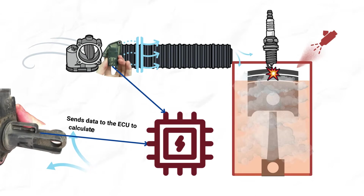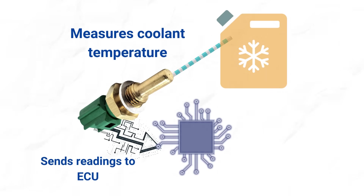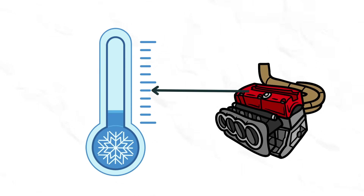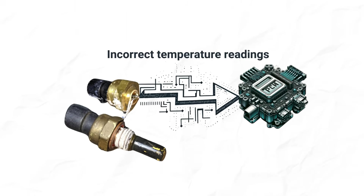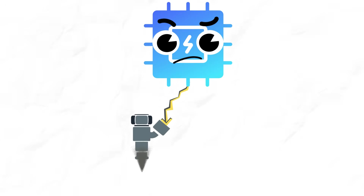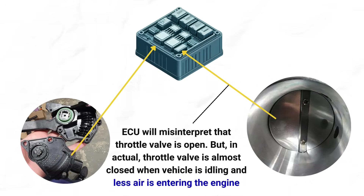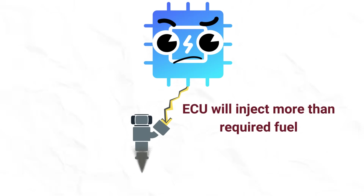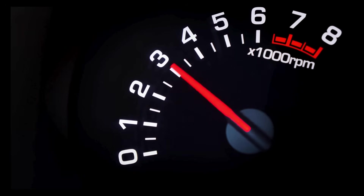The MAF sensor monitors air entering the engine — if it measures an incorrect amount of air, the computer won't be able to determine the correct fuel to inject. The engine coolant temperature sensor monitors coolant temperature; when the engine is cold, the ECU injects more fuel for a rich mixture so the engine rapidly reaches operating temperature. A malfunctioning ECT sensor sends incorrect temperature readings, messing up fuel calculations. The throttle position sensor measures the actual throttle position — if it malfunctions, the ECU may think the throttle is open wider and inject more fuel than required at idle, imbalancing the air-fuel ratio and causing RPM fluctuations.